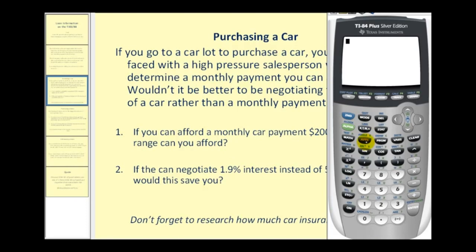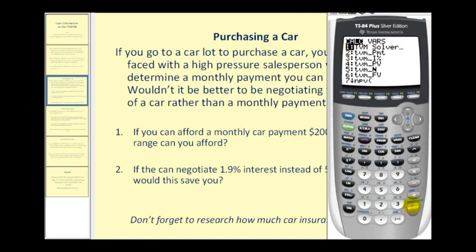From the home screen, press the application key, then select the finance option, and then select the TVM Solver option. This screen allows you to enter in all of this information and then solve for one unknown. N represents the total number of compounds for the loan. I is the interest rate. Present value represents the loan amount. PMT represents the monthly payment. Future value would be zero when the loan is paid off. P/Y represents the payments per year, C/Y represents the compounds per year, and our payments are either at the end or the beginning of each month.